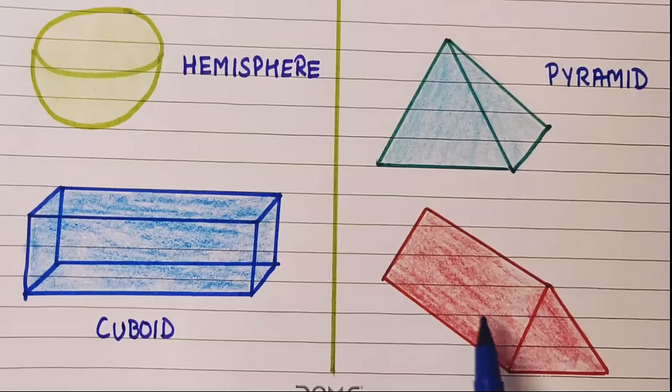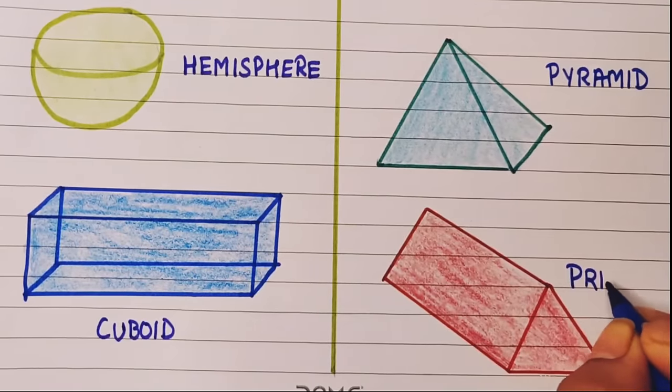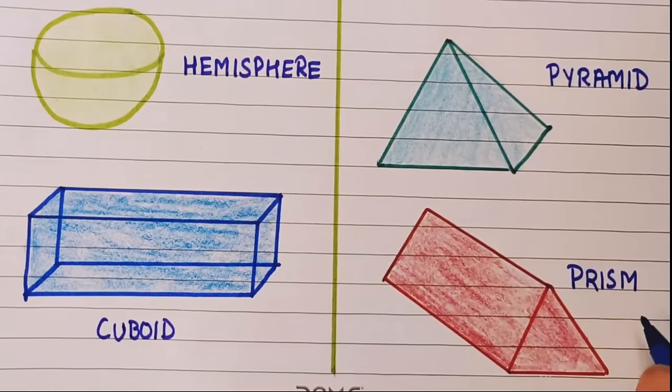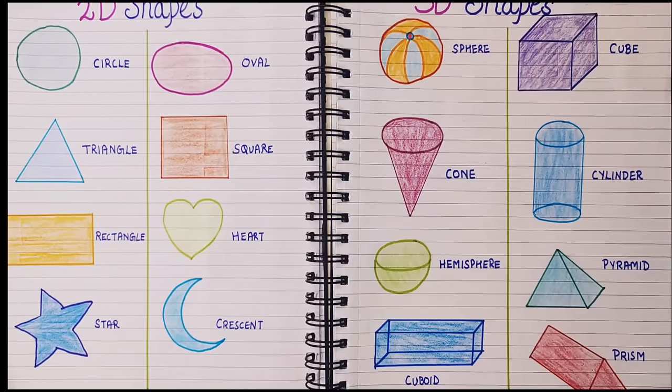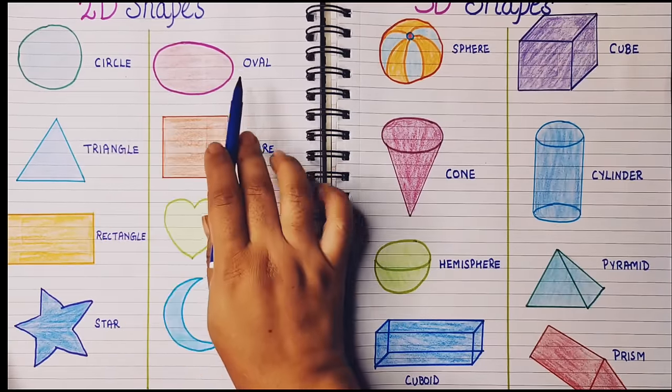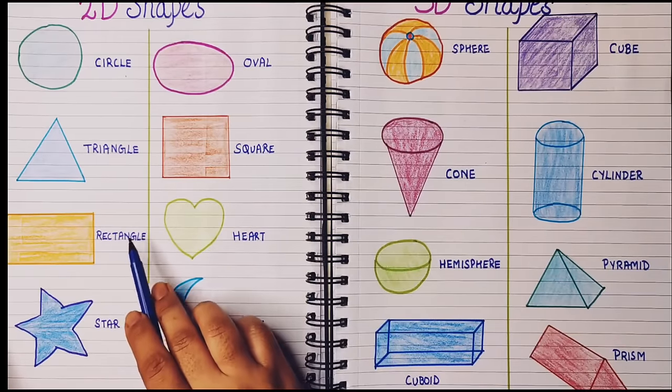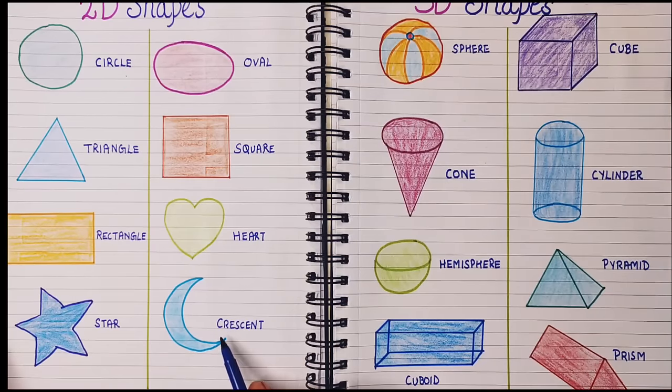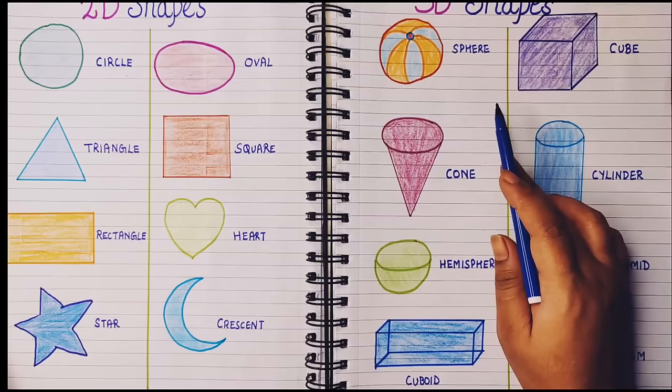The next shape is prism: P-R-I-S-M, prism shaped. Now let's quickly revise all the shapes. First the 2D shapes: circle, oval, triangle, square, rectangle, heart, star, and crescent.